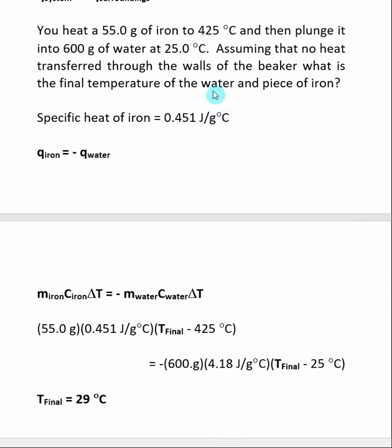So you already know what the specific heat of water is. In order to do this calculation, you need the specific heat of iron. That's something that I can go and look up. In this case, the system is going to be the iron. That's the thing that we're looking at. And the surroundings is going to be the water. So that's what's going to be absorbing heat from the iron. And remember, I need to have this negative sign here.